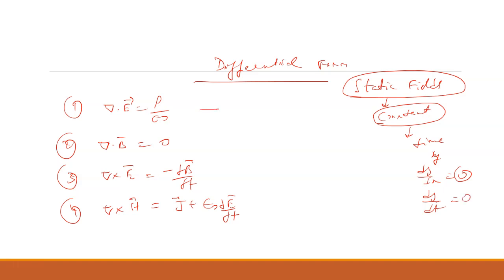For the static fields, there are four types of fields. The first one is E, the second one is D — because D equals epsilon naught times E — the third one is B, and the fourth one is H, where B equals mu naught times H.